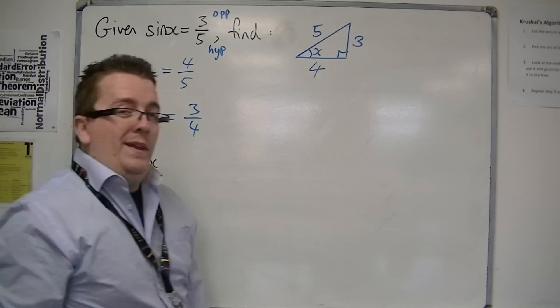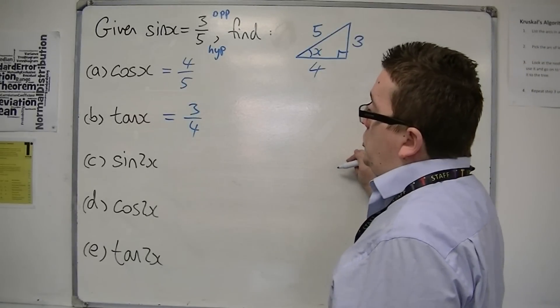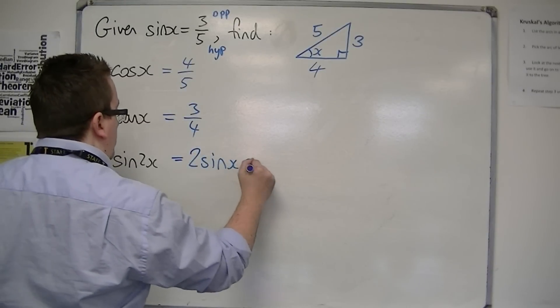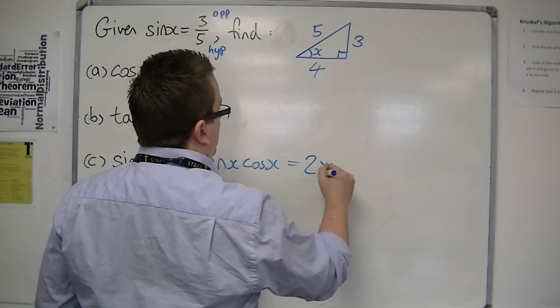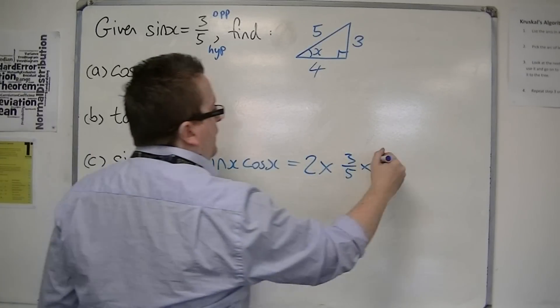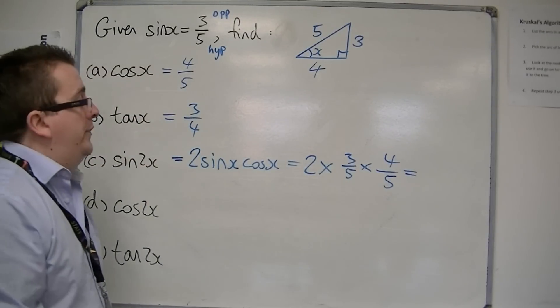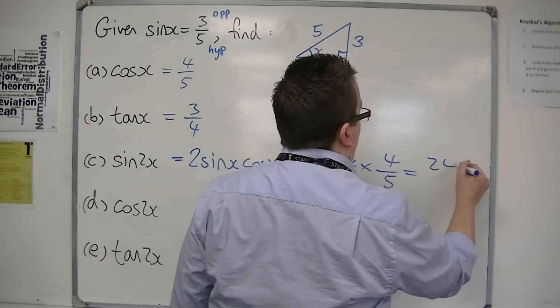Sin 2x is a slightly more tricky thing, but if you remember, sin 2x is 2 sin x cos x. From the previous videos, that's what we arrived at for sin 2x. So that's 2 lots of sin x - 2 lots of 3/5 - times cos x, 4/5. So 2 times 3/5 times 4/5, well 2 times 3 is 6, times 4 is 24, so 24/25.